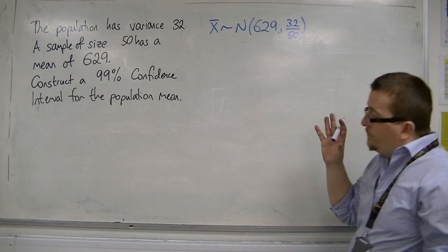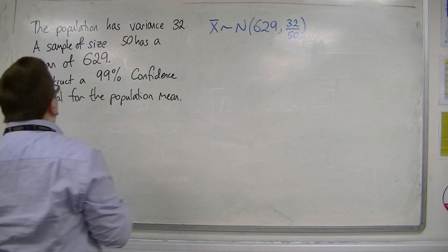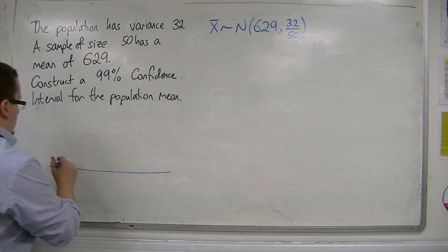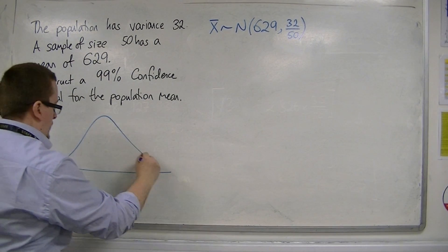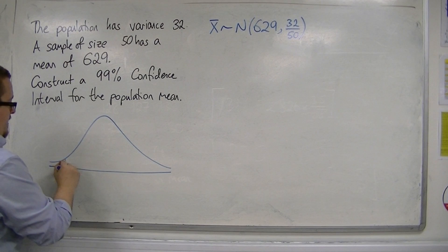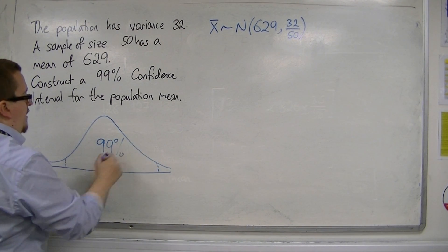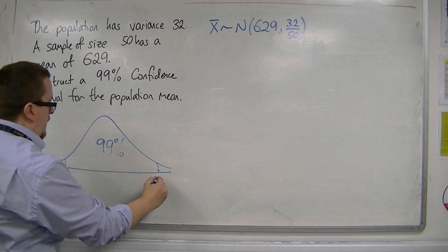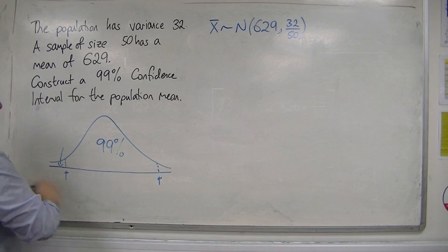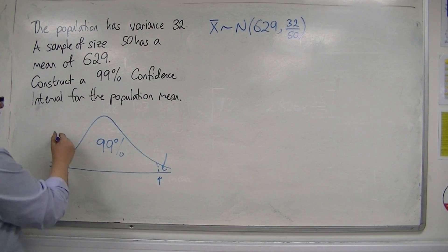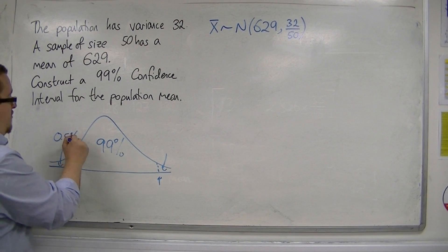Now, we want a 99% confidence interval for the mean. So, we want to be 99% confident that the mean lies between these two z-values. If the total of those two percentages must be 1%, then each one must be 0.5%.